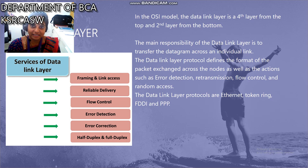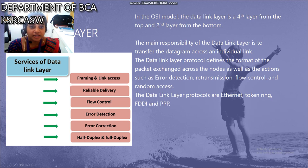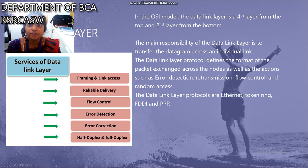The data link layer is part of the OSI model. It is the fourth layer from the top and the second layer from the bottom. The main responsibility of the data link layer is to transfer the datagram across an individual link.